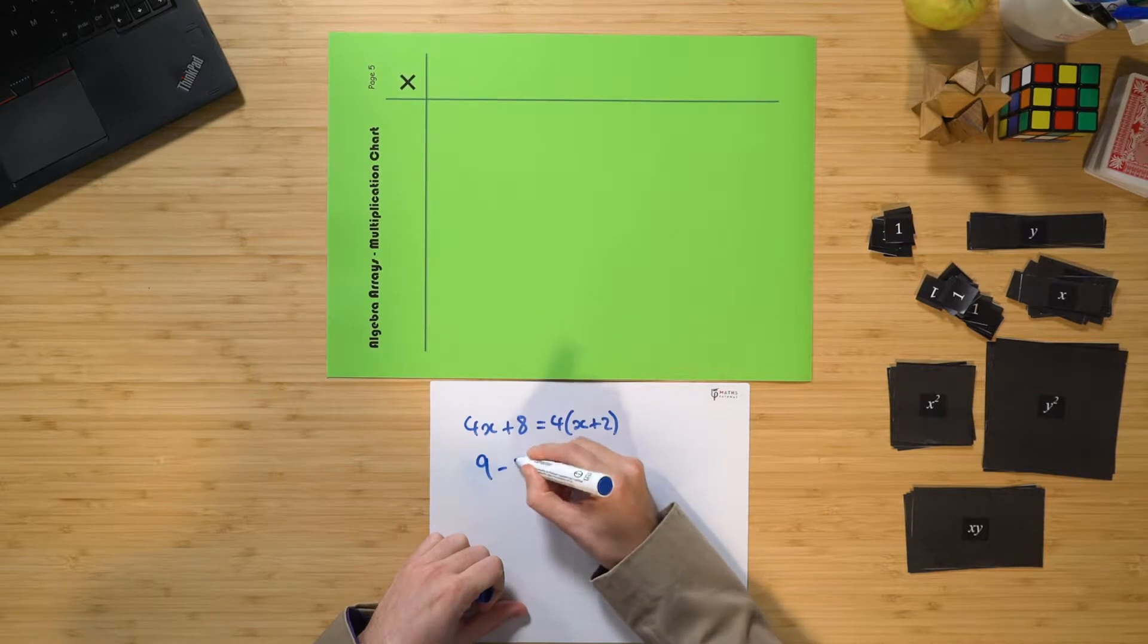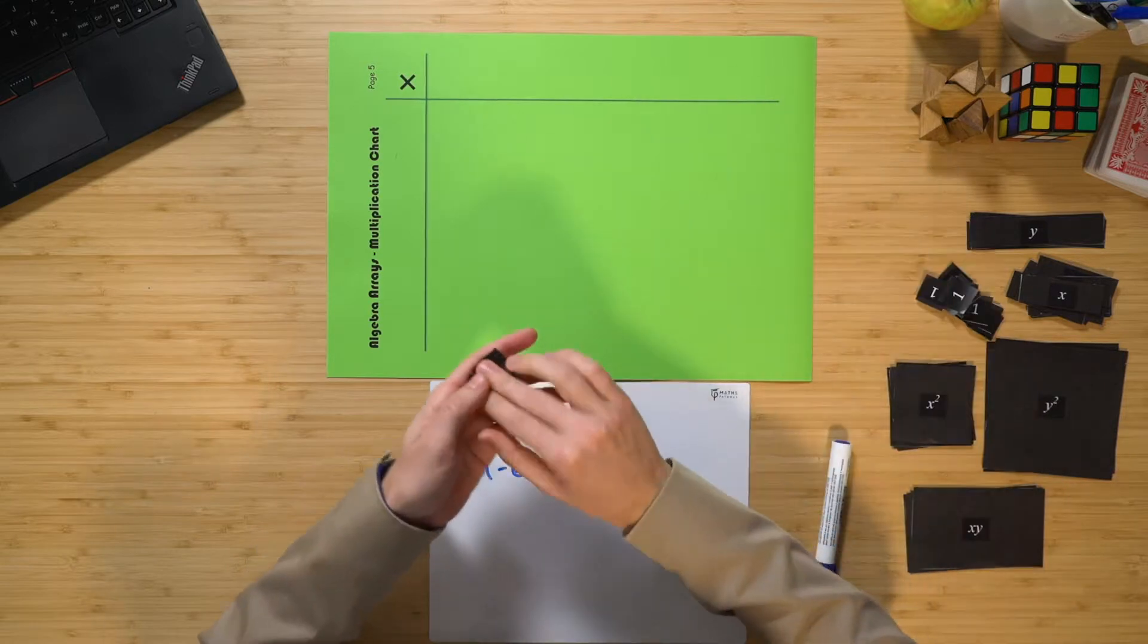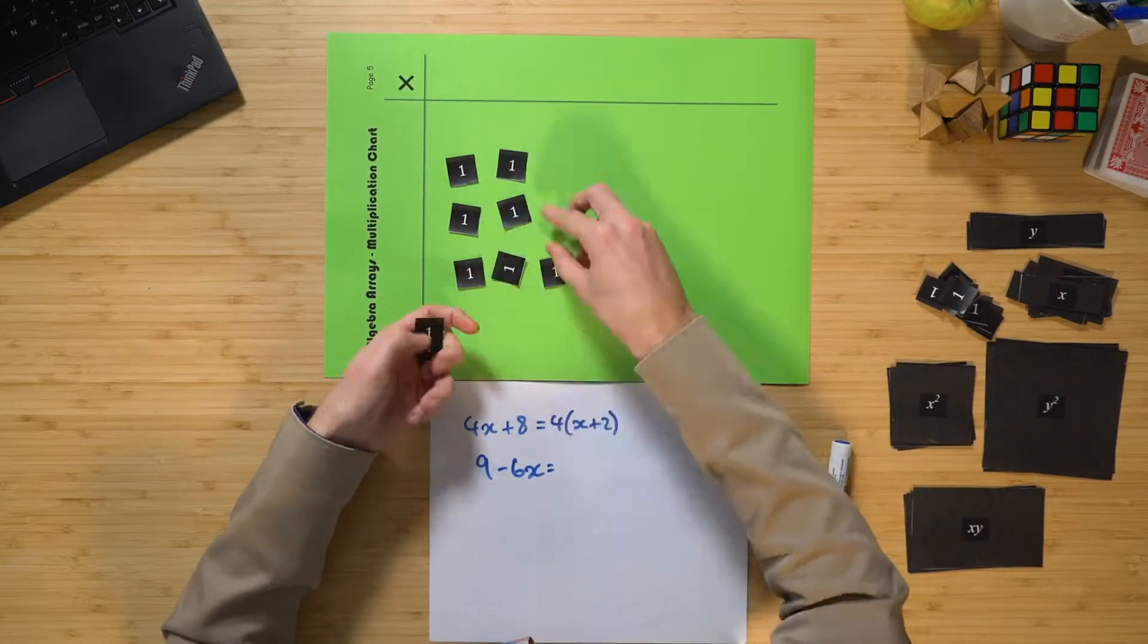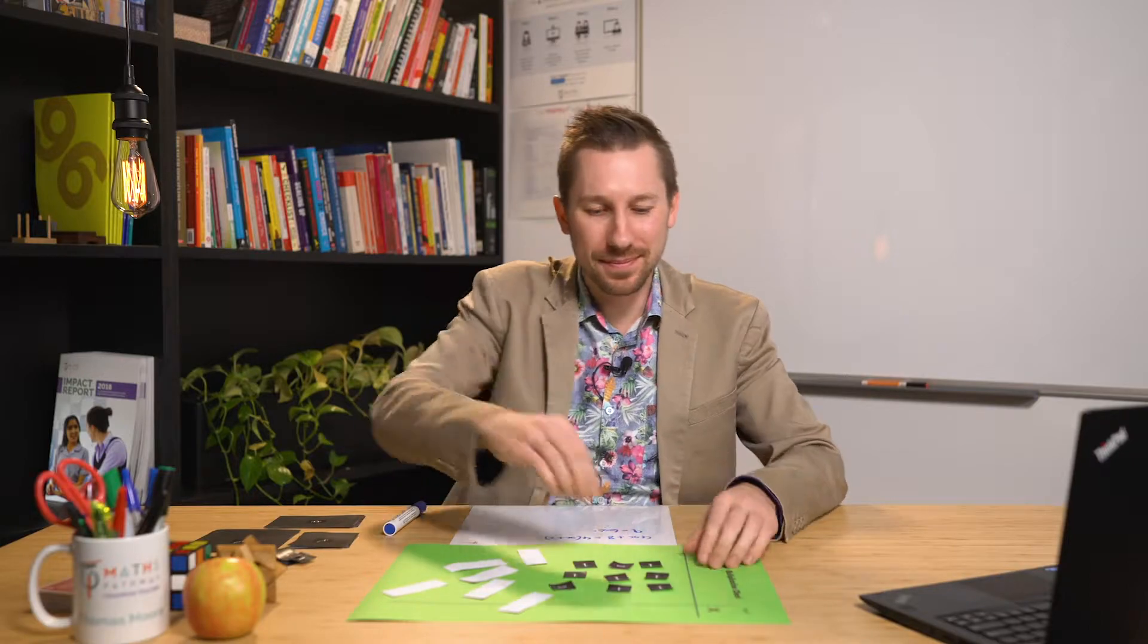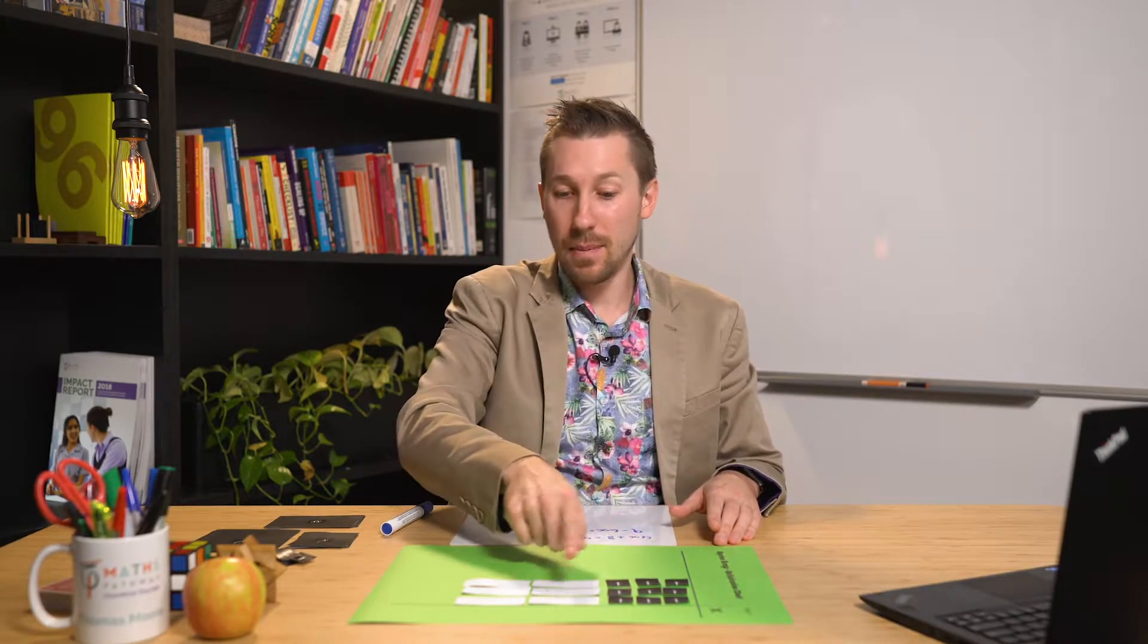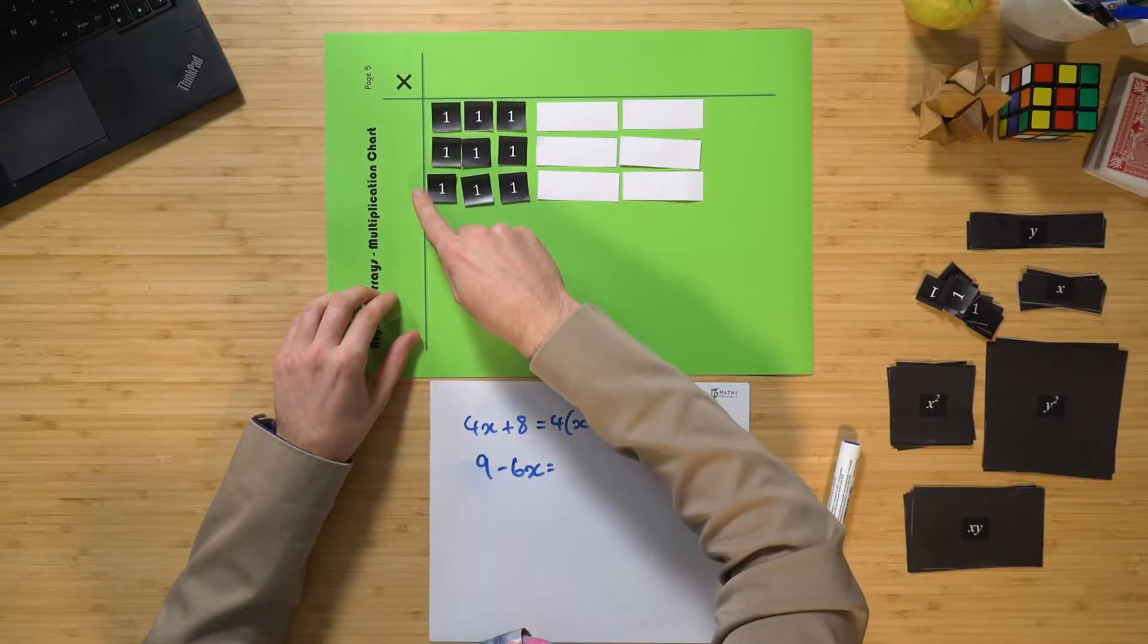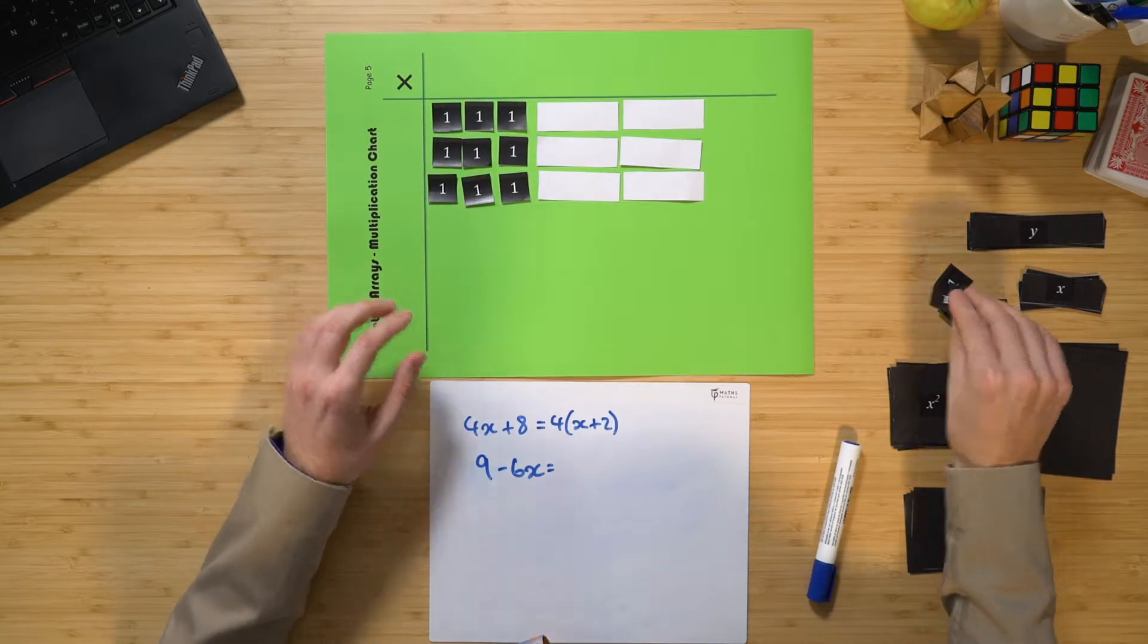And as you can see, rearranging it into a rectangle really does help in order to figure out what goes on the outside. Let's try another example. Maybe 9 minus 6x. Well, I need to get 9 to start off with and then negative 6x. And once again, I just need to rearrange these to make a rectangle. Let's see what we can come up with. So as you can see here, I've got my 9 minus 6x. And therefore, what's going to go on the outside? Well, I need to have a look. As you can see here, I've got a height of 3 ones, don't I? So I can just simply put those in.